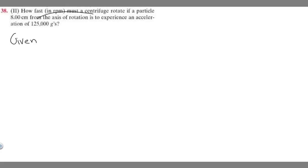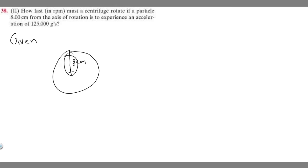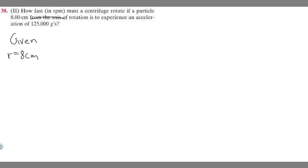When they give you a distance from the axis of rotation, what they're really talking about is the radius of your circle. So this is our axis of rotation — imagine it like a circle. They're saying this distance, and we know this distance is the radius. So the radius is 8 centimeters, and the acceleration is 125,000 Gs. This is the centripetal acceleration, so we know it's going to be 125,000 Gs.